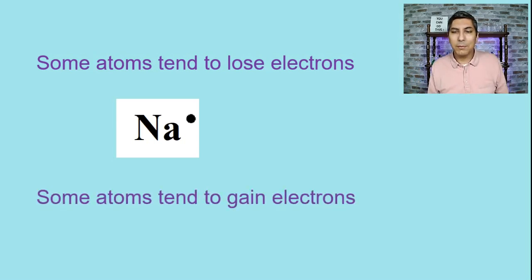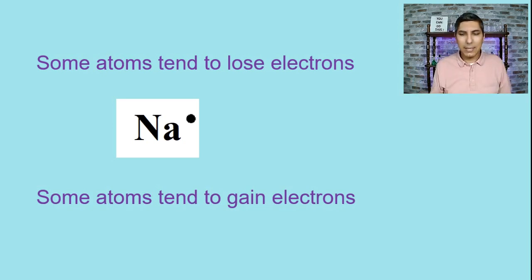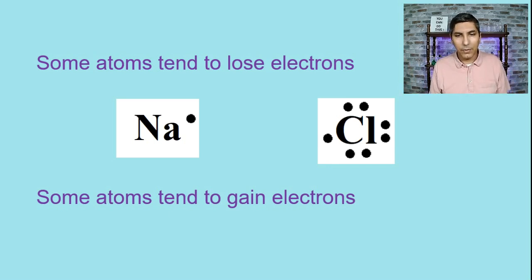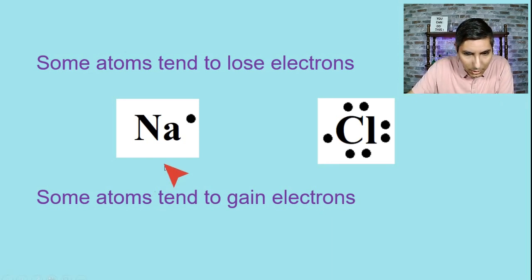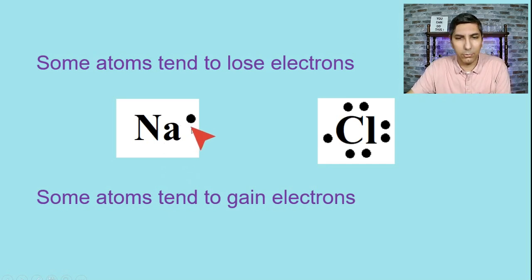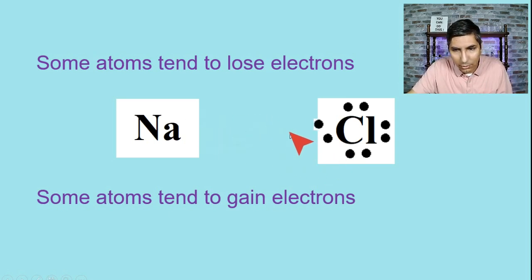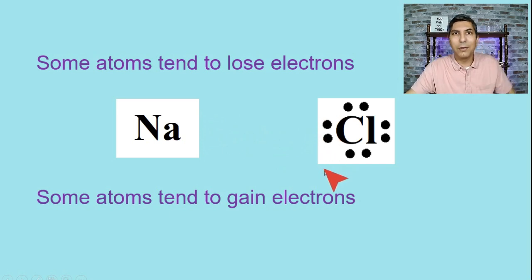We also know that some atoms tend to gain electrons. In group 17, toward the right-hand side of the table, we have atoms like chlorine that have seven valence electrons. They're more stable when they gain one valence electron, which gives them an octet. Here we have two atoms that can help each other out: sodium would like to lose one electron, and chlorine would like to gain one electron. If sodium gives an electron to chlorine, they're both stable — they both have that octet. They're both happy.